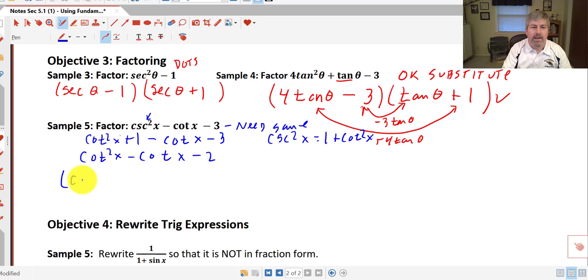So factors of cotangent squared are going to just be cotangent x and cotangent of x. And factors of 2, it's prime, so my only options are 1 and 2. And they need to add to negative 1. So minus 2 and plus 1, we have successfully factored.